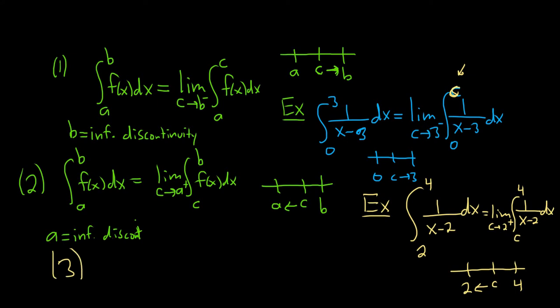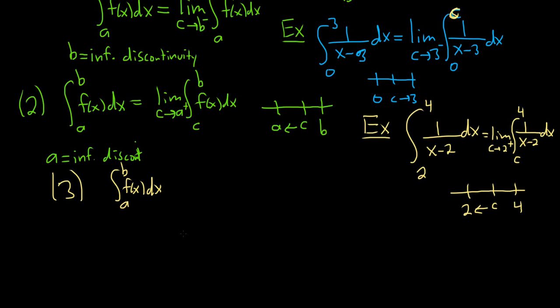Three, let's say we have something like this, the integral from a to b of f(x) dx. And I guess the last case would be if we have some infinite discontinuity somewhere between a and b. So let's say c is an infinite discontinuity, and it's somewhere between a and b. So in this case, you just break it up at c. So you go from a to c, f(x) dx, and then here you go from c to b, f(x) dx.